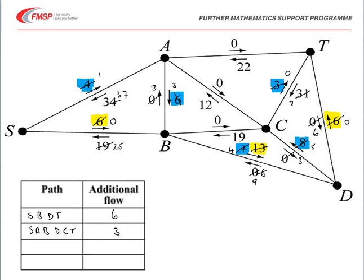All of the paths going into T — A to T, C to T, and D to T — are now at full capacity. So we've got no further possibilities. The marking for that part was M1 and A1 for the table completed and correct procedure shown on the diagram.